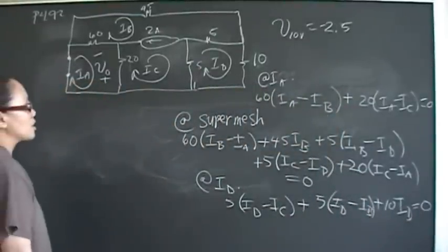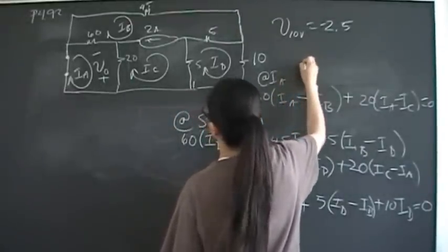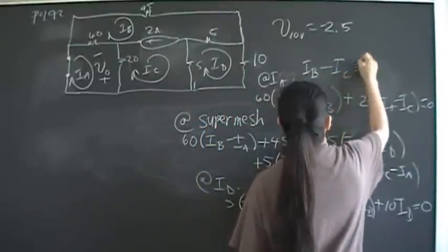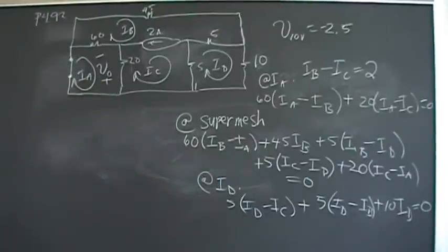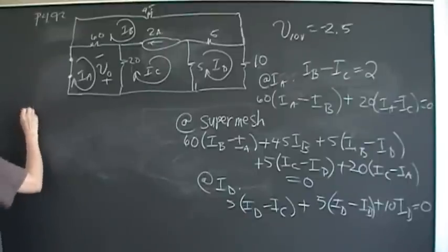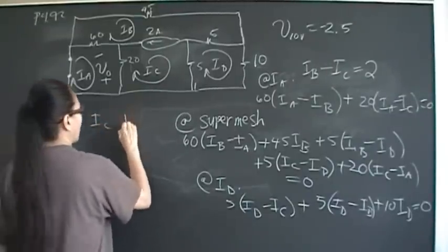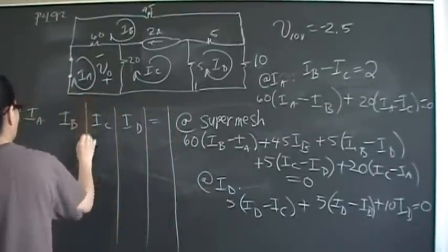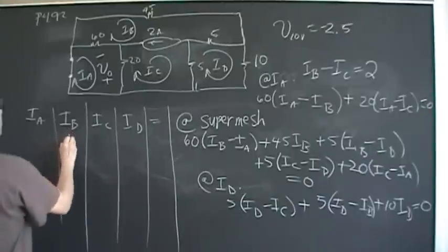We have three equations and four unknowns, so the fourth equation comes from the constraint equation from the independent current source: Ib − Ic = 2 amps.